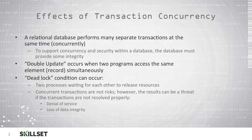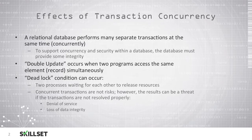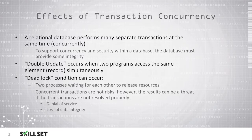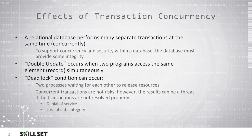A double update occurs when two programs access the same record simultaneously. A deadlock condition can occur if two processes are waiting for the other to release the resources. Since they are both waiting for the other, they will essentially be waiting indefinitely.